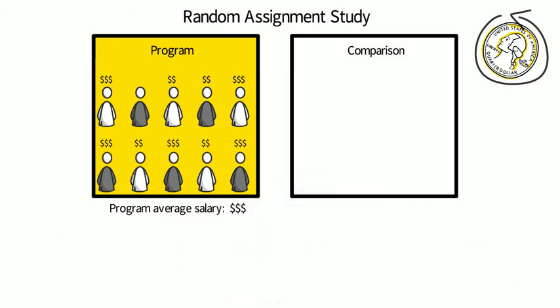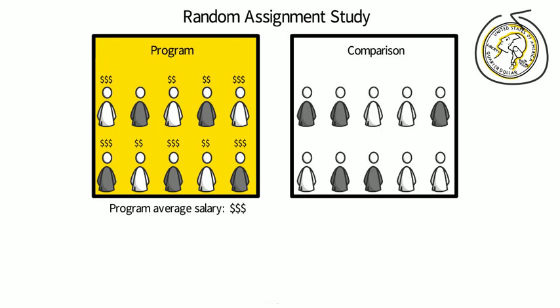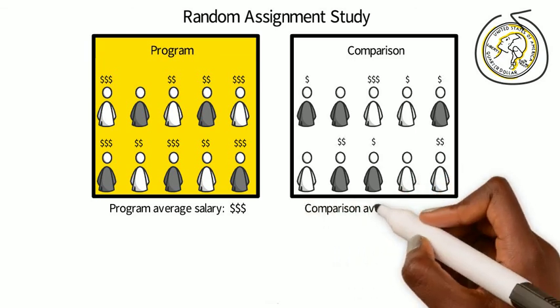Ten other people are randomly assigned to the comparison group. They can't get the program services that are being tested, although they can still seek out any other services that are available in the community. Like the people in the program group, their results vary, and some people find jobs with good wages.